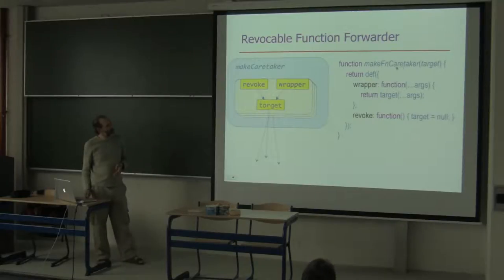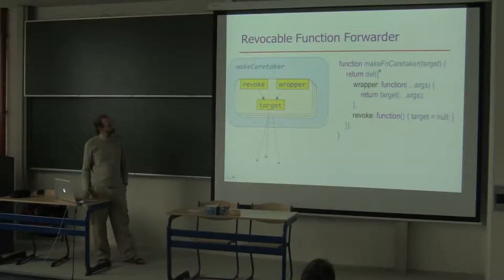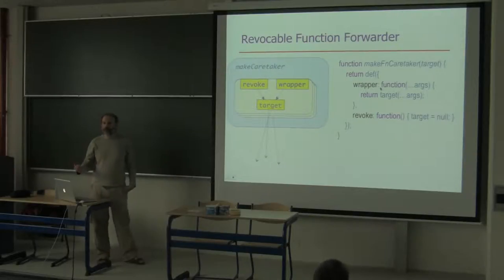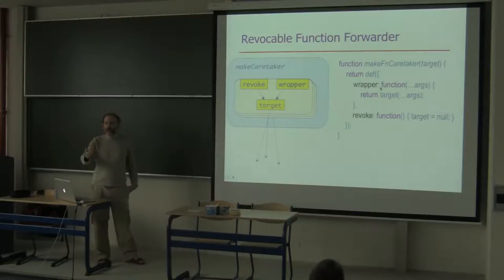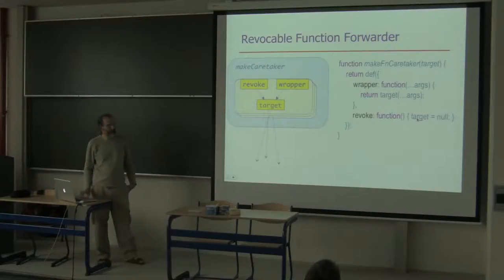The wrapper acts identically to the target function — every time the wrapper is called, it simply forwards the call to the target and returns whatever the target returns. Until somebody calls revoke, which sets the target variable to null.